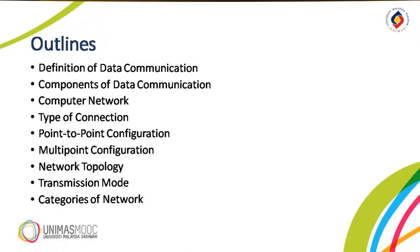These are the outlines for this unit. The first one is the definition of data communication. Then we look at the components of data communication. The third one is what is a computer network. The type of connection, which are the point-to-point configuration and also the multi-point configuration. We are also going to look at the five types of network topology and its transmission mode, and lastly, the categories of network.